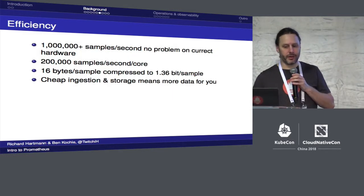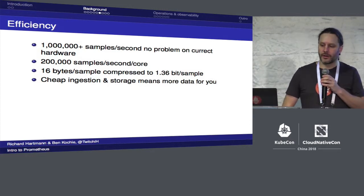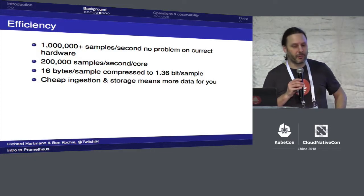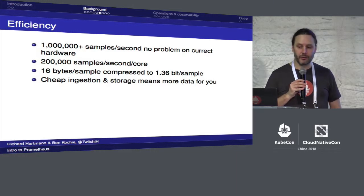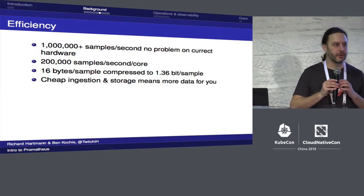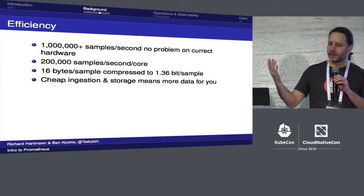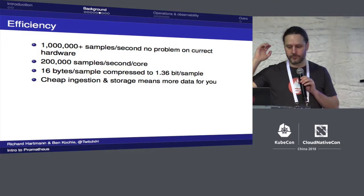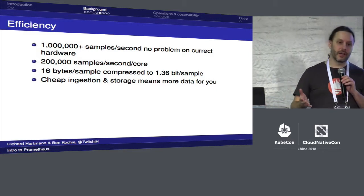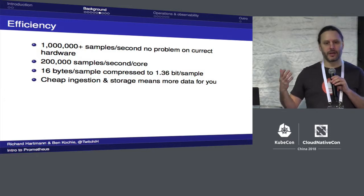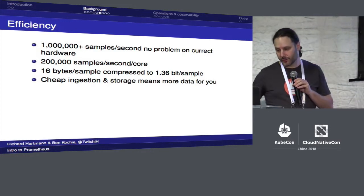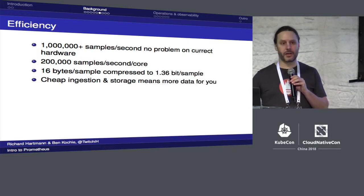Prometheus is super efficient. We did some new benchmarking recently where the key metric was not ingestion speed — a million samples per second is more than enough for just about every situation. What we really wanted was to reduce the cost to ingest. We got it to about 200,000 samples per second per CPU. Storage is about 1.3 bytes per sample — and that's data-dependent; if data doesn't change, it compresses down to 0.17 bytes per sample. Very cheap to ingest lots of data.